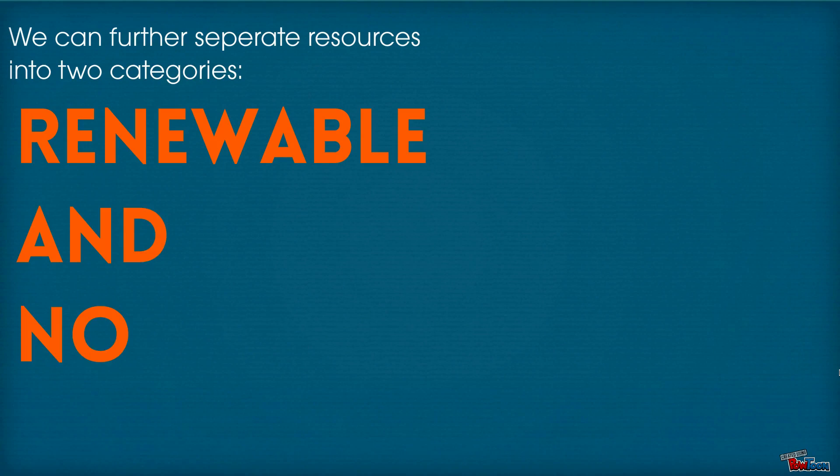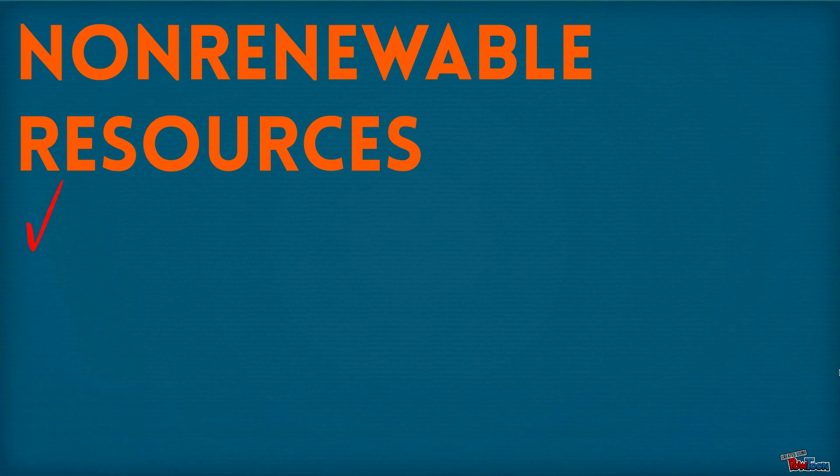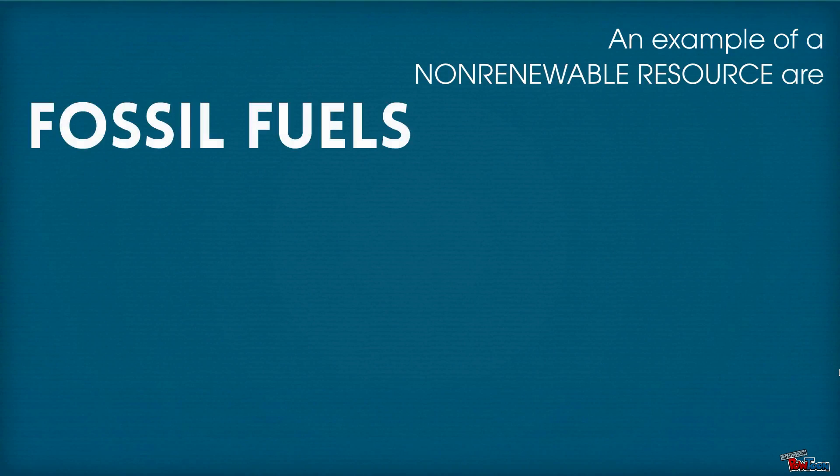We can further separate resources into renewable or non-renewable. Non-renewable resources have no replacements once they are used and take millions of years to naturally form. An example of non-renewable resources are fossil fuels, which are things like coal, natural gas, peat, and oil.